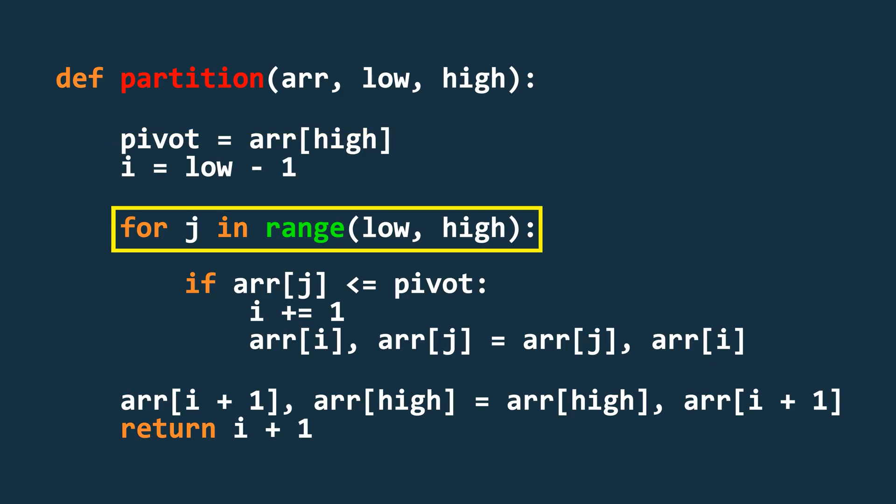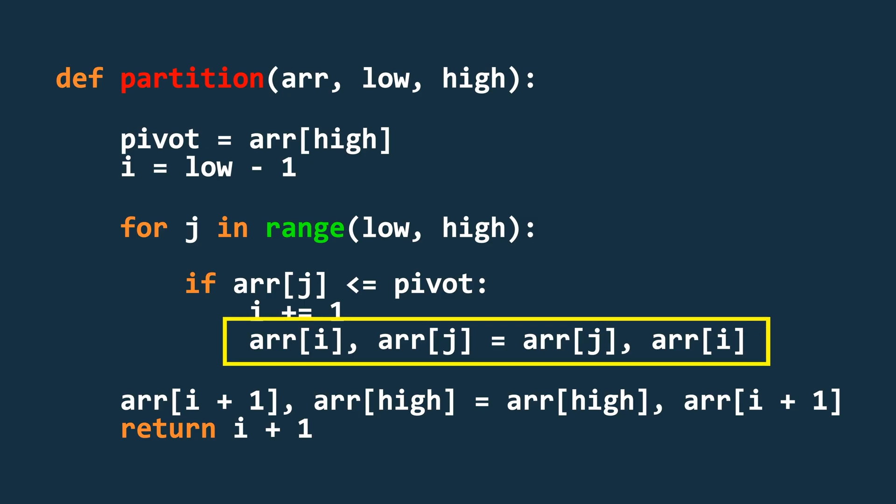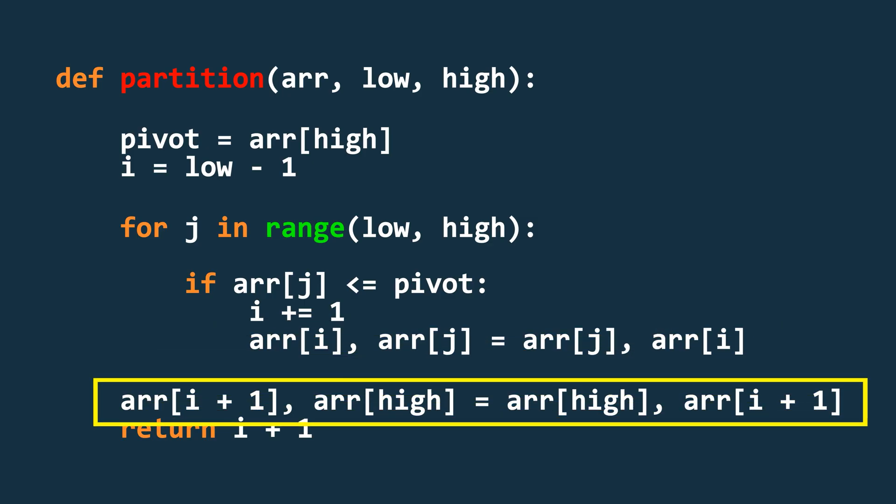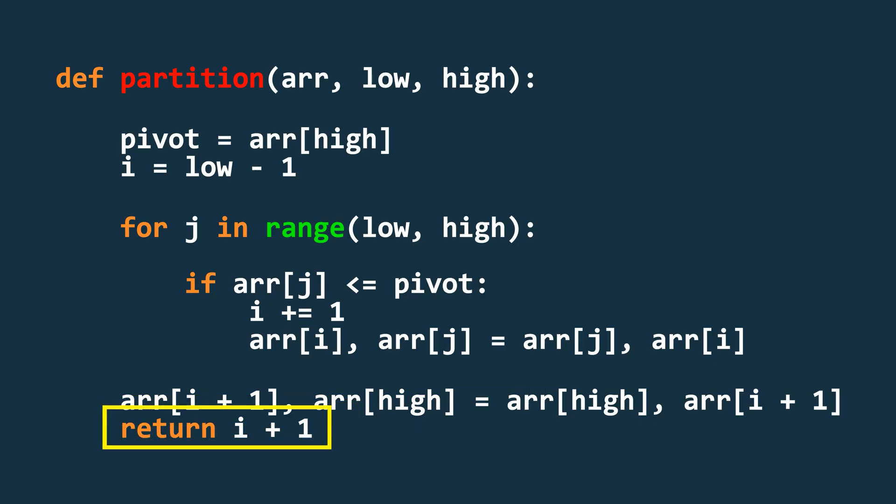Then, we run a loop from low to high. Inside the loop, if the current element is less than or equal to the pivot, we increment i and swap the elements at indices i and j. After the loop ends, we swap the pivot element with the element at i plus 1. And finally, we return i plus 1, which will be used by the quicksort function to divide the array into sub-arrays.